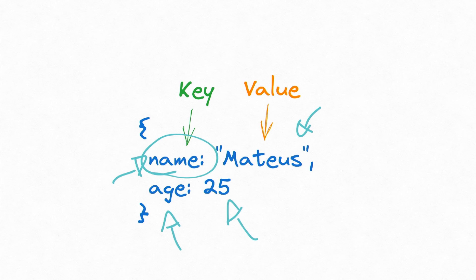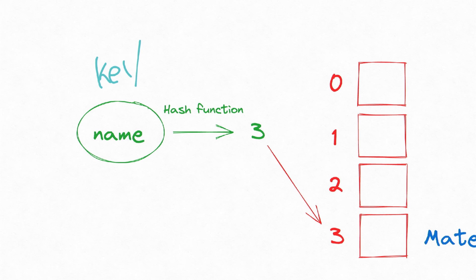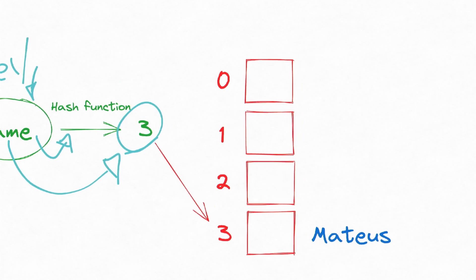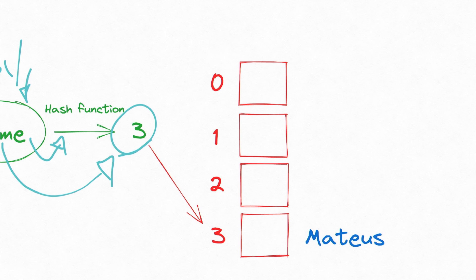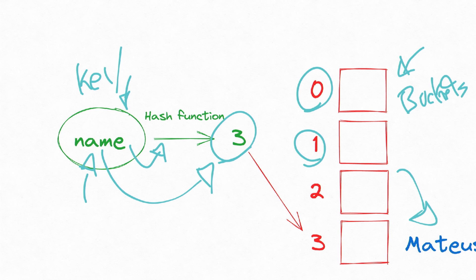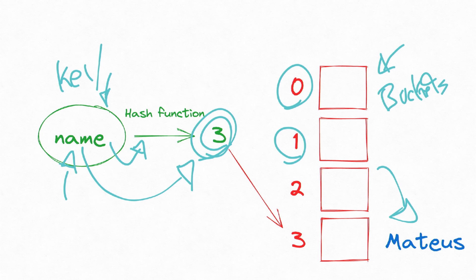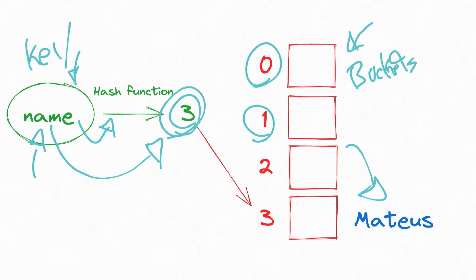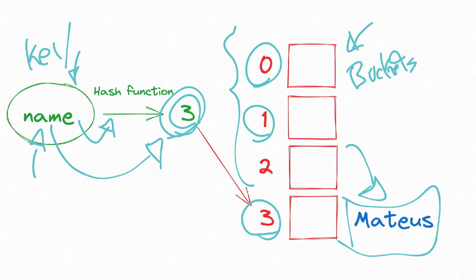How can we have something that looks like an array but accepts a string as the index? The way it works is pretty clever. A key — for example, 'name' — goes through a hash function, and this hash function returns an integer, for example three. So we know we can identify the key 'name' via index three. We can then allocate it to an index of an existing array. We have indexes and what we call buckets, which is where we store the data — for example, 'my name'. So when we access the name key, it converts it to an integer through a hashing algorithm and accesses index three of the internal array.